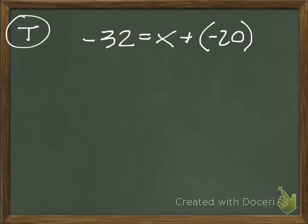So we need to get x by itself, so we need to move that plus a negative 20. The way that we do that is instead of having minus 20, we do the opposite. So we're going to add 20.